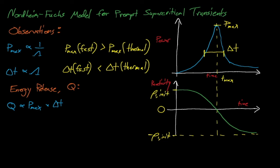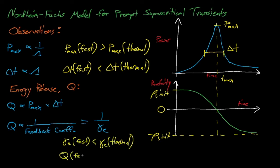If we dig a little bit deeper, we'll find that Q is actually inversely proportional to the system's reactivity feedback coefficient, gamma e. Gamma sub e is generally smaller for fast systems than it is for thermal systems, which means that fast prompt supercritical transients will generally release more energy than thermal prompt supercritical transients. However, this assumes that the accident only causes one prompt supercritical excursion.